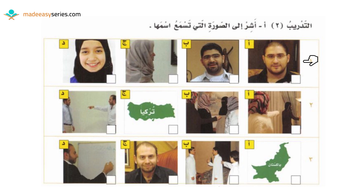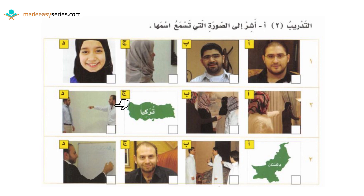Starting from the top right, the four options in the first line are: picture Hamza is صديق, picture با is أخ, picture جيم is أخت, picture دال is صديق. Next line from the right: picture Hamza is أنت, picture با is هاذه, picture جيم is تركيا, picture دال is أنت. Last line from the right: picture Hamza is Pakistan, picture با is هذا, picture جيم is صديق, picture دال is مدرس. Now I'm going to play the audio — do the answers by yourselves, then we'll check together.